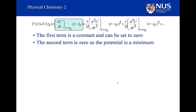What about the next term? It is proportional to the displacement, but it is multiplied by the gradient of the potential energy at R sub e — at the equilibrium bond length. What is the gradient at the equilibrium bond length? Of course it's zero, because it is at the bottom of the potential energy well. So that term disappears and is equal to zero.